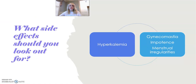So what side effects should you look out for? Number one is hyperkalemia. The second one — more so with spironolactone as opposed to eplerenone — is gynecomastia, meaning breast swelling or breast pain in males. Other potential side effects include impotence in males or menstrual irregularities in females.